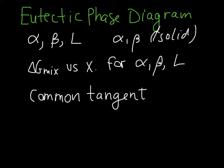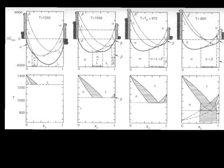Let's look at some of these G versus X curves that would result in a eutectic forming. We have plots of delta G mixing as a function of composition X2 at different temperatures, decreasing temperatures as we go across to the right. Down at the bottom is where we're mapping out our phase diagram in terms of T versus X2. We have three different curves because we have three different phases possible: alpha, beta, and liquid.